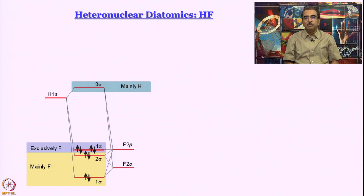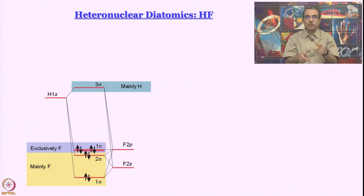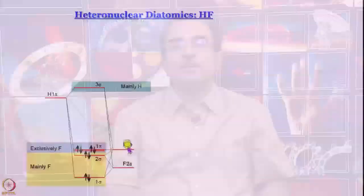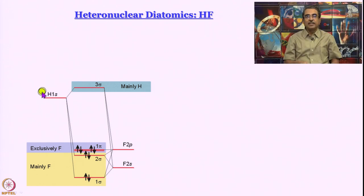If you think of F2s and F2p and compare with H1s, first thing we want to say is that we are considering the internuclear axis to be the z axis. So, when we want to discuss sigma interaction, it is the 2pz orbital of fluorine that is going to participate. 2px and 2py orbitals will remain on fluorine because on hydrogen atom, there is no other orbital of sufficiently low energy that have comparable symmetries.